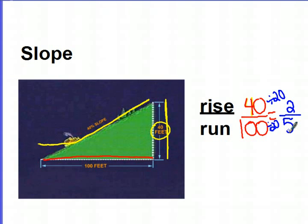But what does that 2 over 5 actually mean? The 2 over 5 means that for every 5 feet this way, the tractor goes up 2. So that's the rate that he's moving up this hill.